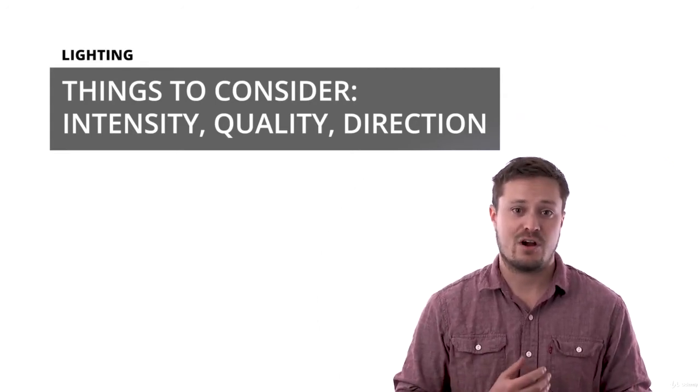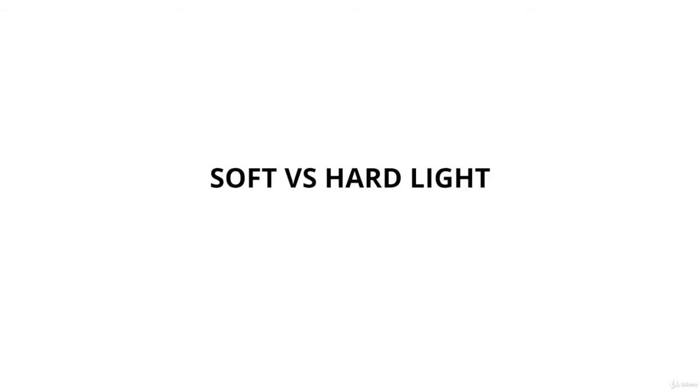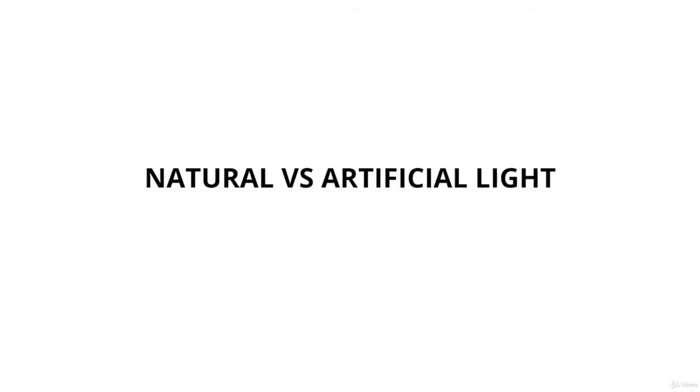In this section of the Photography Masterclass, we're going to look at soft light versus hard light, natural light versus artificial light, and what an onboard flash will do for you versus an off-camera flash. Then we will look at what hot lights are.